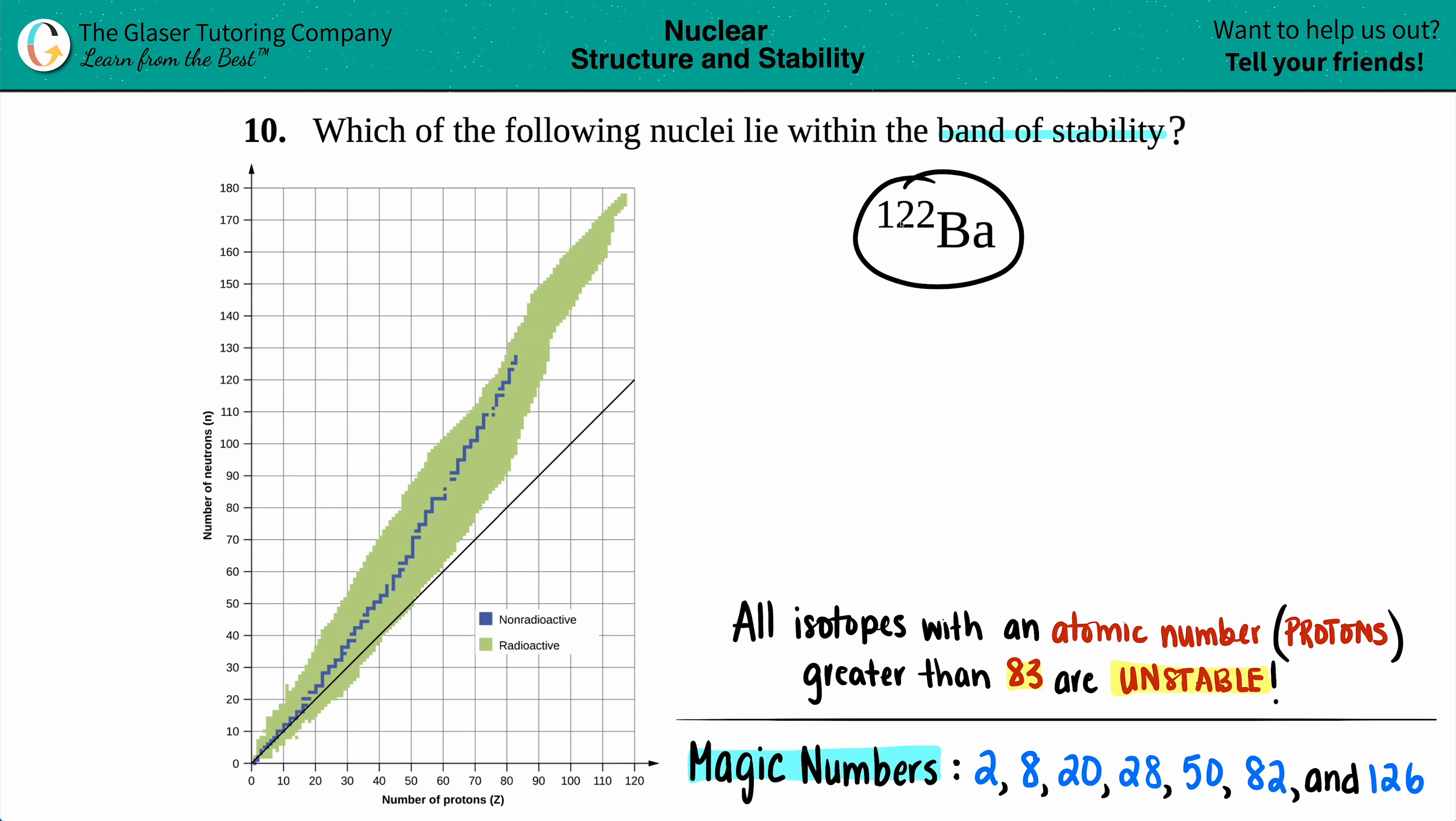Now generally, with this type of notation, there's always going to be a number on the top and then a number on the bottom. They gave us a number on the top, 122. The 122 on the top represents the atomic mass. Now the atomic mass is the mass of the nucleus, which has both protons and neutrons.